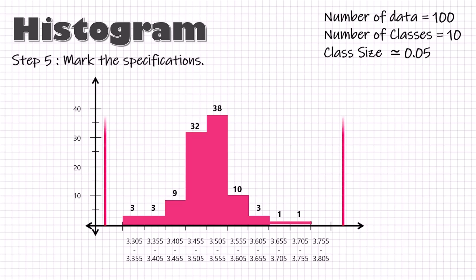Finally, mark the specification limits in the histogram, add a title and we are done. Now, how to use this histogram?